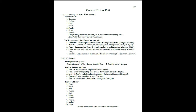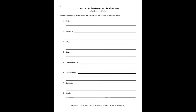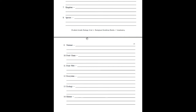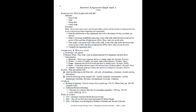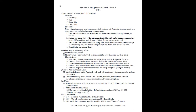In the back of the student guide they will also have the memory work listed by unit. At the beginning of the student guide, for their unit work, they will have a vocabulary sheet with the vocabulary listed in the order it's assigned. They'll fill in this vocabulary sheet throughout the unit, and then they will have the student assignment sheet.